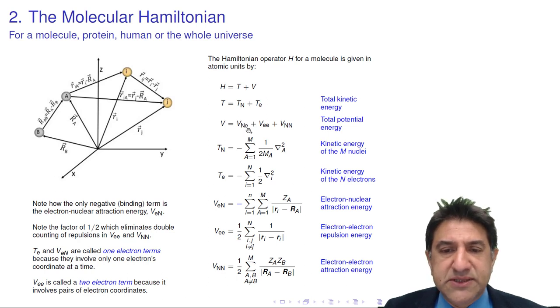The second part of the Hamiltonian is the total potential energy, and it's composed of three parts: a nuclear-electron attraction energy, an electron-electron repulsion energy, and a nuclear-nuclear repulsion energy.